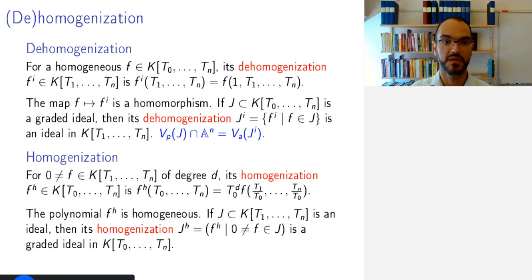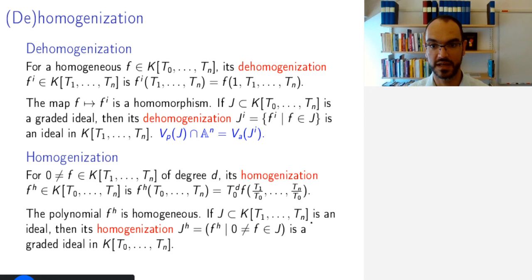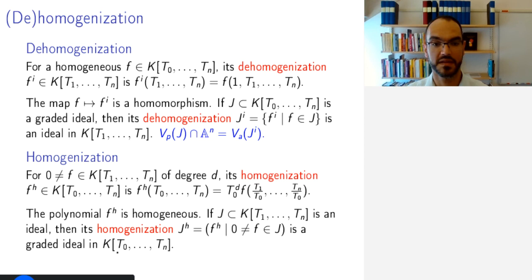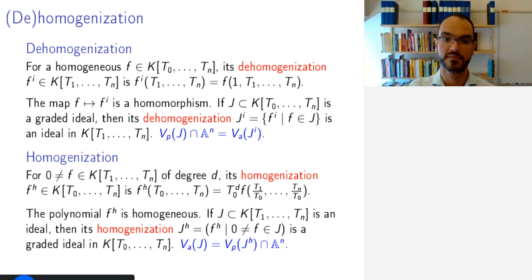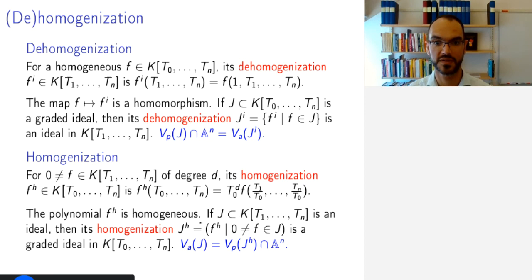In general, the polynomial F^H will be homogeneous because we are correcting for the degrees. If J is an ideal in the polynomial ring in N variables, its homogenization is defined as the ideal generated by F^H for all non-zero F in J, and this is a graded ideal in K[T0, ..., TN]. Homogenization is not a ring homomorphism — it does not work well with sums but does work well with products. By the correspondence from earlier, V_A(J) is exactly V_P(J^H) intersected with A^n.